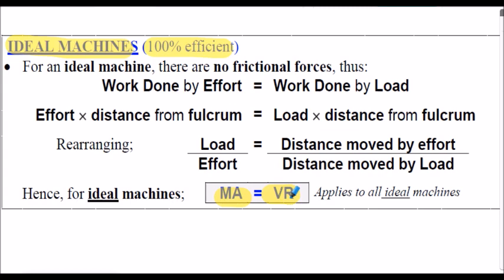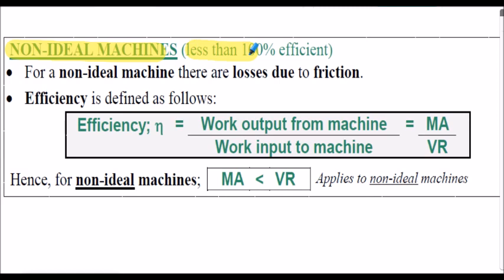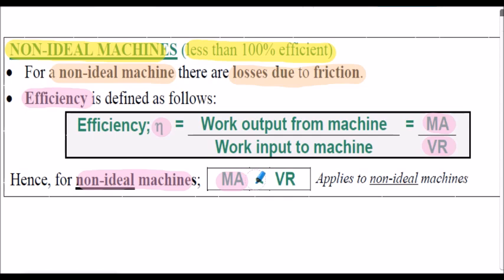However, for non-ideal machines — that's machines that are less than 100% efficient due to friction losses — the efficiency equation is defined as follows: efficiency, usually symbol eta, equals MA divided by VR. For non-ideal machines, the mechanical advantage is always less than the velocity ratio. That's an overview of the definitions and formulae we're going to use to solve problems involving screw threads and screw jacks.